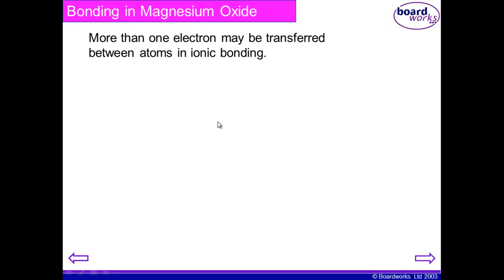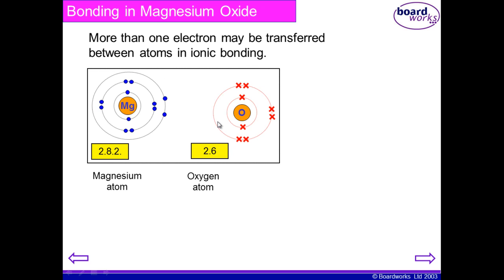Last time we were looking at the exchange of a single electron between different types of atoms. Today we are going to be looking at examples where more than one electron is exchanged. An example of this is magnesium oxide.